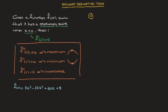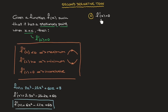The first thing we need to do is find the stationary points by solving f'(x) = 0. At a stationary point the first derivative is always equal to 0. Differentiating f(x) using the power rule gives f'(x) = 6x² − 42x + 60. Solving f'(x) = 0 therefore means solving 6x² − 42x + 60 = 0.